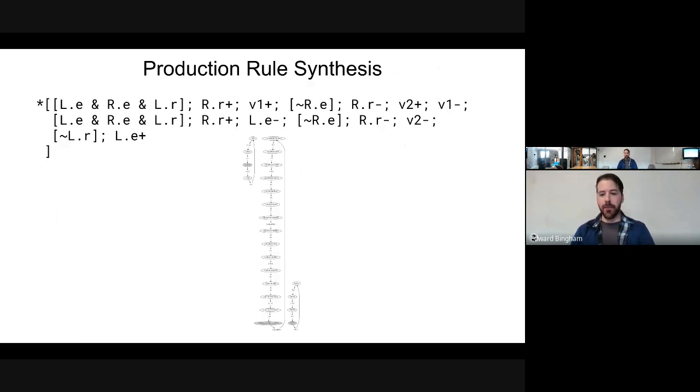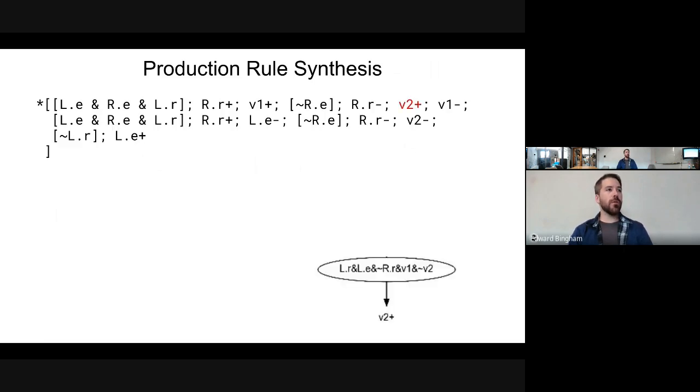Now we're going to take this HSE and build production rules from it. We have our state space as rendered by HSE sim, and we'll start with one transition in particular - V2 up. If we look at the place before V2 up, we have a predicate: L.R and L.E and not R.R and V1 and not V2.